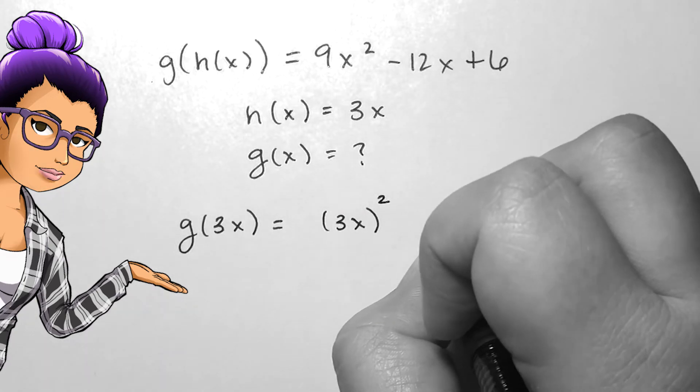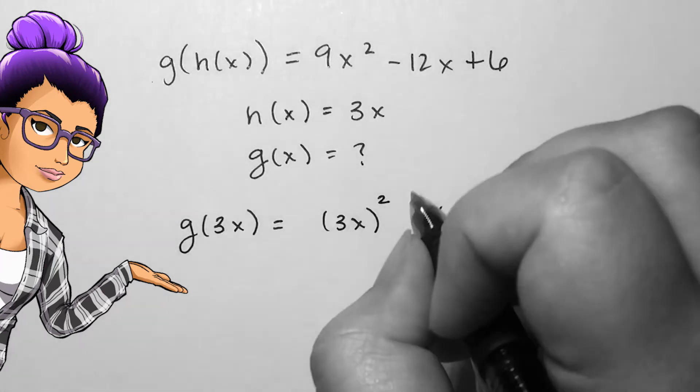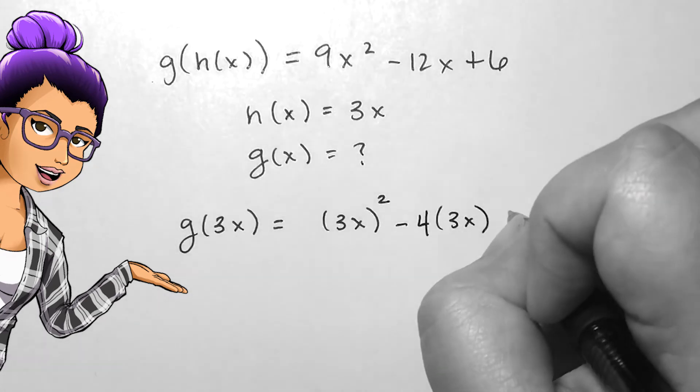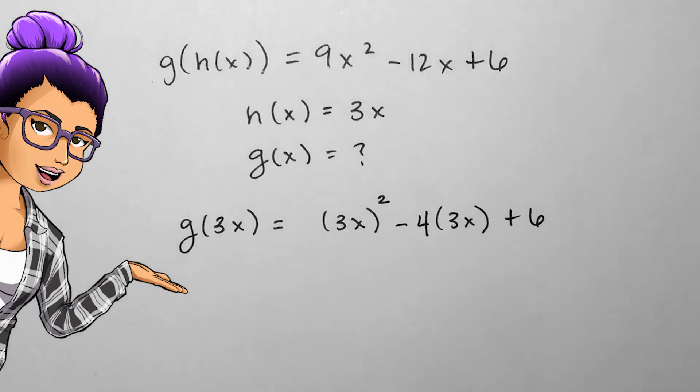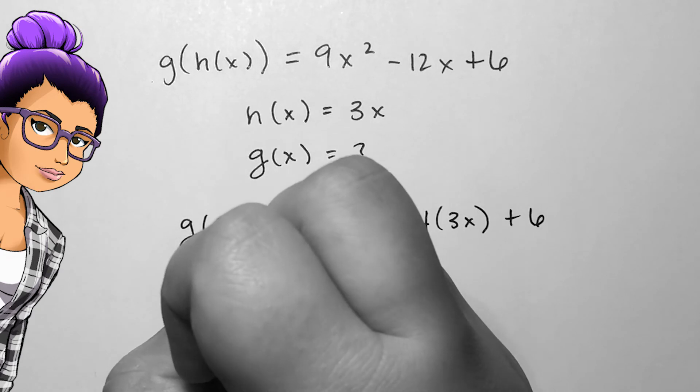In the next term, negative 12x, if I want 3x to show up but be equivalent to what is there, I need to multiply 3x by negative 4. So this term could say negative 4 times 3x. The last term doesn't have an x in it, so I can leave it alone.